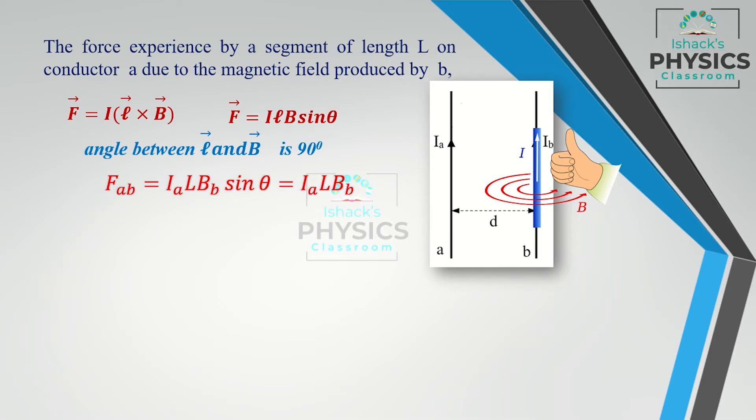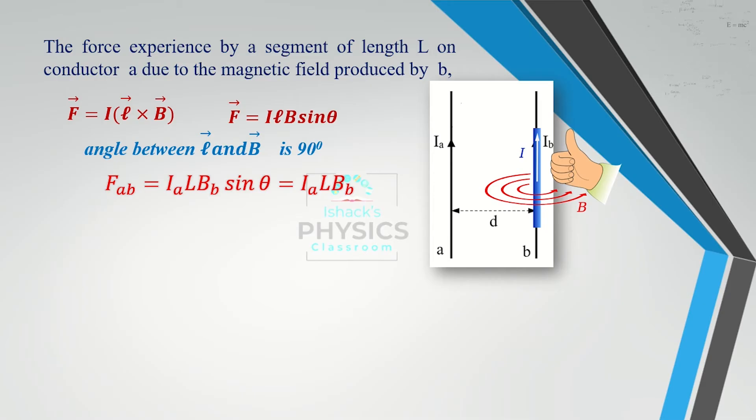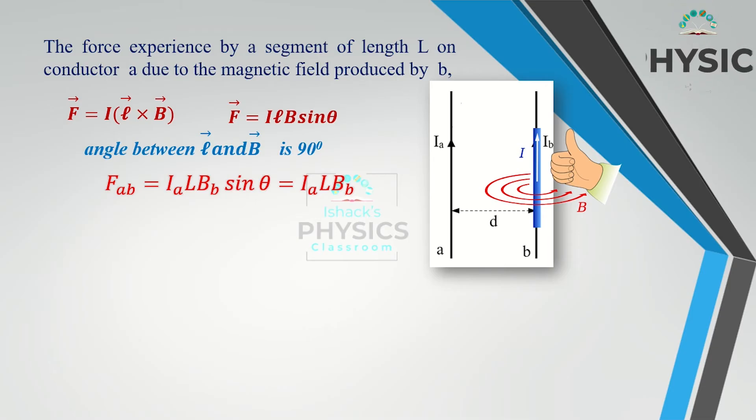So FAB is equal to Ia × L × BB, and FBA is equal to Ib × L × BA.